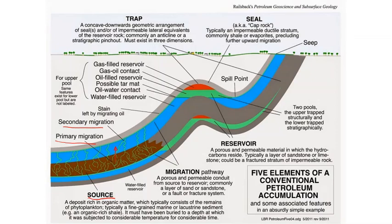The reservoir rock is a typically porous and permeable material in which the hydrocarbons reside — typically a layer of sandstone or limestone, or a fractured stratum of impermeable rock. For the reservoir rock, it is important to have porosity and permeability. Porosity and permeability are the indigenous features of sandstones because sandstones are normally coarse-grained and the grain contact gives us porosity and permeability. Limestone and carbonate rocks also form good reservoir rocks because they develop secondary porosity due to dissolution by chemically active fluids.